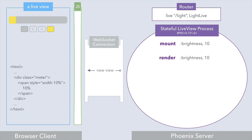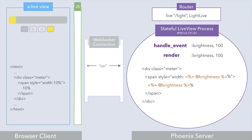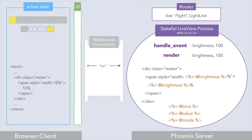Splitting the rendered content into static and dynamic parts really pays off when we start handling events. For example, when we click the button to turn the light on, an on event is pushed down the WebSocket to the live view process and gets handled by a matching handle event callback. A brightness of 100 is assigned to the socket, and whenever a live view state changes, the render function is automatically called. Since handling the on event only changed the brightness value, only those EEX tags in the template need to be re-evaluated. It doesn't have to re-evaluate the code in all the EEX tags — only the things that changed.